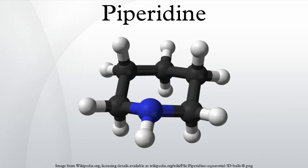NMR chemical shifts: 13C NMR = 47.27, 25.21 ppm; 1H NMR = 2.79, 2.19, 1.51 ppm.